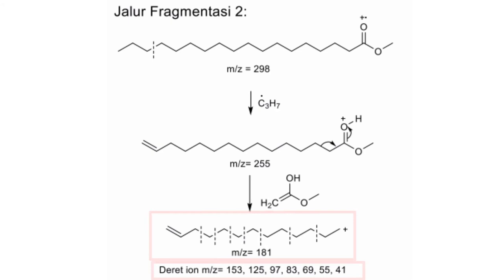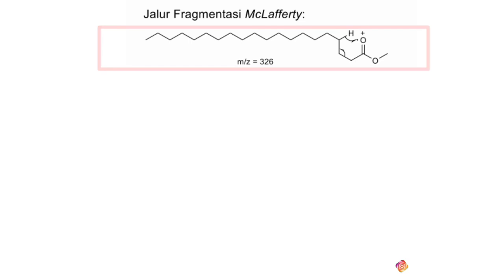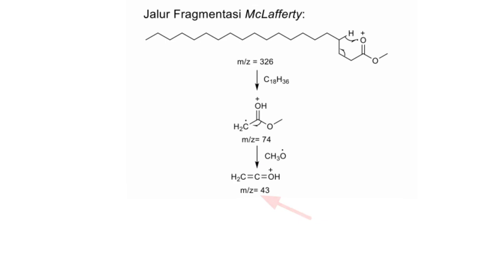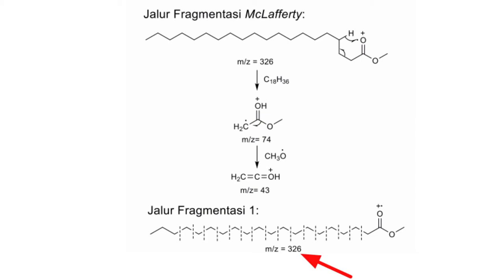Berikut gambar 7 spektrum MS dari metil ester arasidat, di mana ion molekulnya terbaca di spektrum masa sebesar 326 m/z, lalu kehilangan C₈H₁₆, yaitu terjadi pola fragmentasi McLafferty, dan terbaca senyawanya itu adalah enol yang masa per elektronnya adalah 74, dan kehilangan O-methyl sehingga menjadi 43 m/z. Lalu ada jalur fragmentasi pertamanya, di mana ion molekul 326 terjadi pemutusan alkil secara berkelanjutan, mulai dari 283 sampai yang terakhir adalah 87 m/z.